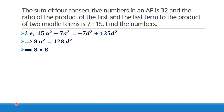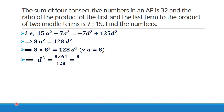Now by substituting the value of A equal to 8, we get 8 into 8 squared equal to 128D squared. So D squared equals 8 into 64 divided by 128, which equals 8 by 2, equal to 4. This implies D equal to plus or minus 2. So we have found our common difference D.